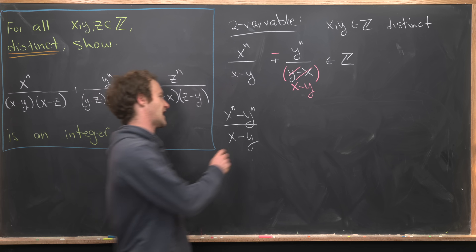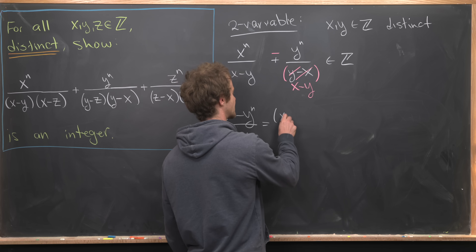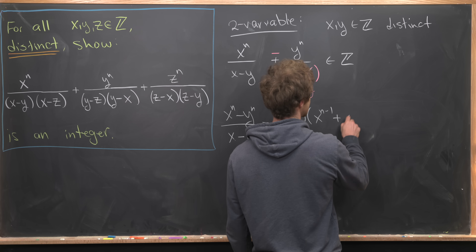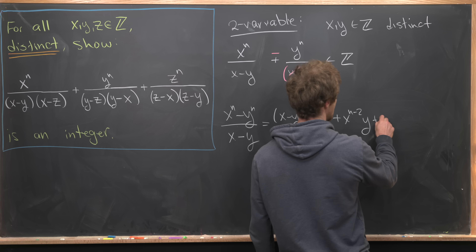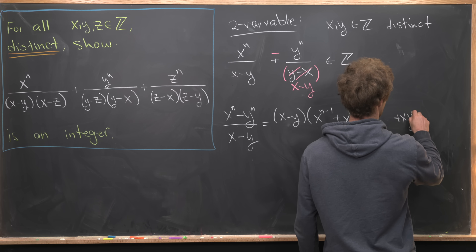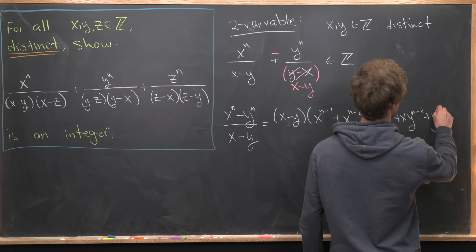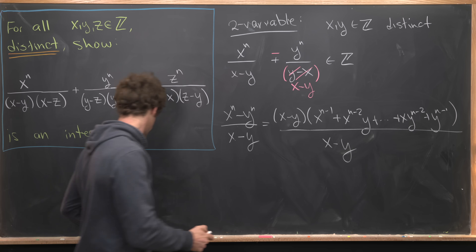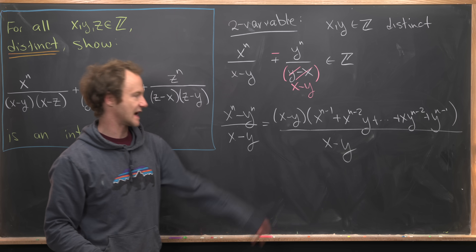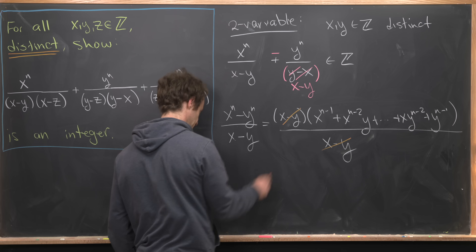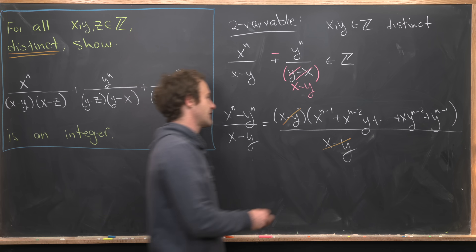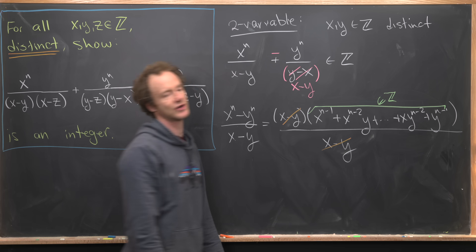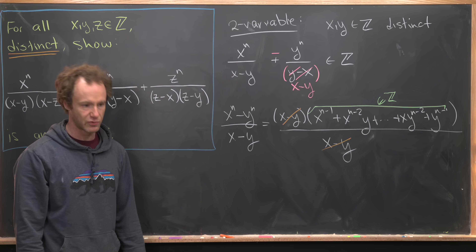The numerator (x^n minus y^n) has a well-known factorization: we can factor out (x minus y) to get x^(n-1) plus x^(n-2)·y plus ... plus x·y^(n-2) plus y^(n-1), all over (x minus y). Canceling (x minus y) from numerator and denominator leaves a combination of integers, which is clearly an integer. So the two-variable version is pretty easy.